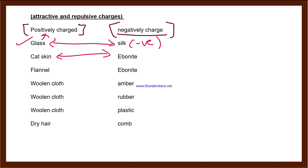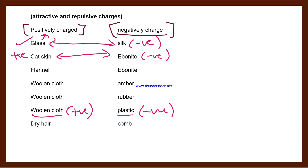Similarly, if you take a cat skin and rub it with an ebonite rod, the ebonite rod gets a negative charge and the cat skin gets a positive charge. Similarly, if you take a woolen cloth and rub it with a plastic rod, the plastic gets a negative charge and the wool gets a positive charge. Always remember: objects like a cat, your hair, dry hair, cloth — these generally acquire positive charge. Objects like ebonite rod, rubber, plastic, comb — these acquire negative charge.